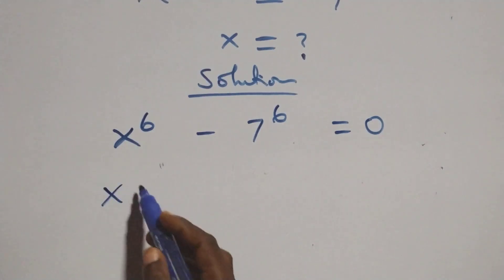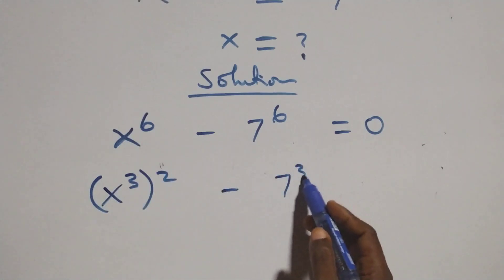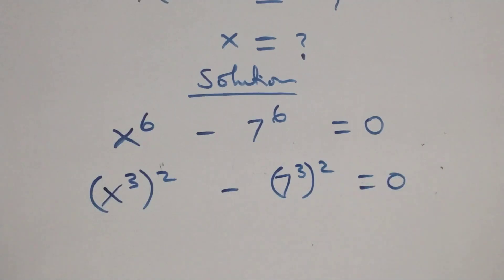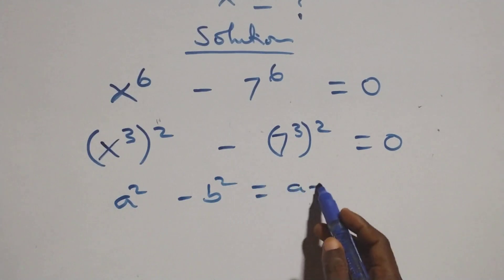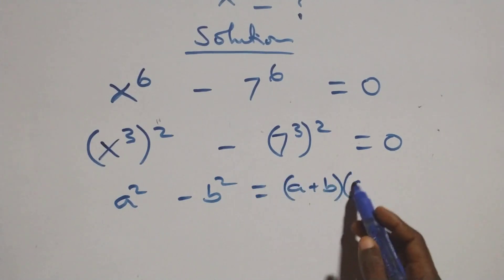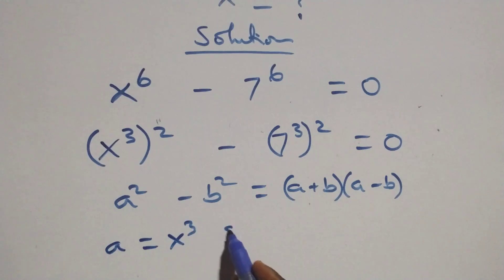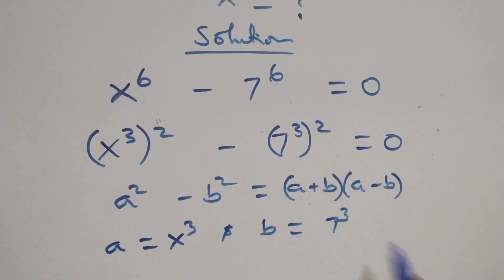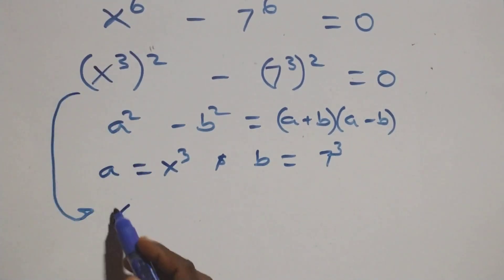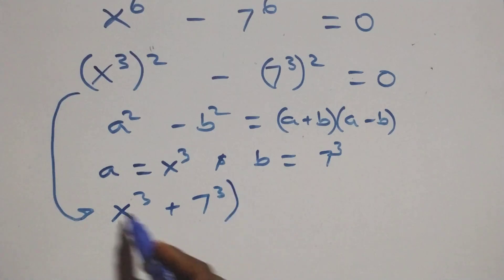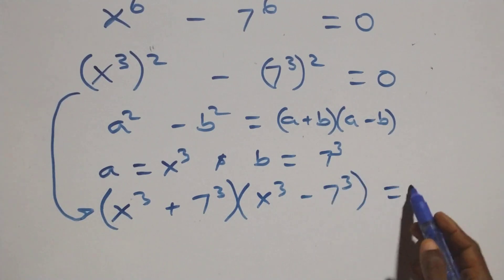Our next step: we can rewrite this as x raised to the power 3, raised to the power 2 — since 2 times 3 gives us 6 — minus 7 raised to the power 3, raised to the power 2, equals to 0. This follows from a squared minus b squared, which is the same as (a plus b) into (a minus b), where a stands for x raised to the power 3 and b stands for 7 raised to the power 3. Which implies we have (x³ + 7³)(x³ − 7³) = 0.